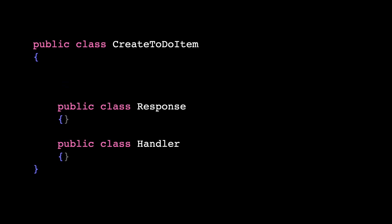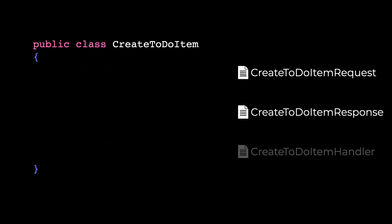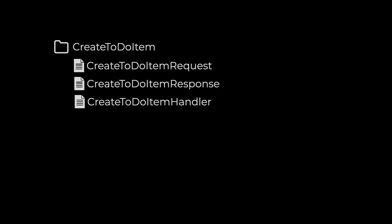Another possible way is by using one folder per feature. You remove all those classes out of a single file, and all the related classes stay together inside of a single folder. You know that folder contains everything needed for that feature.